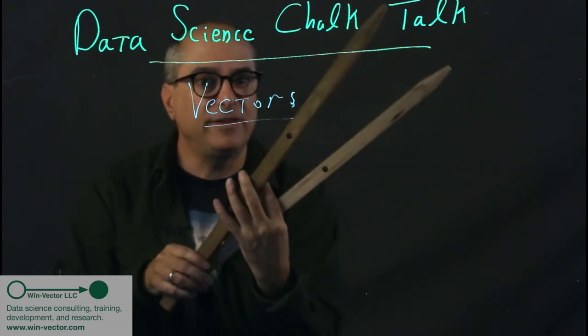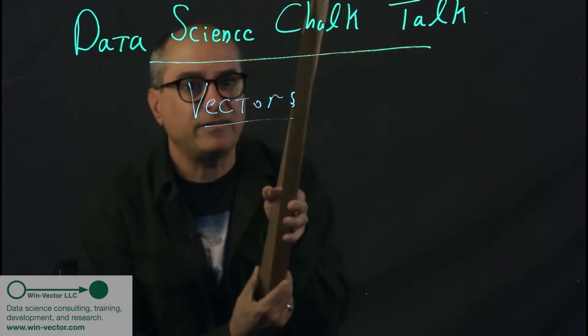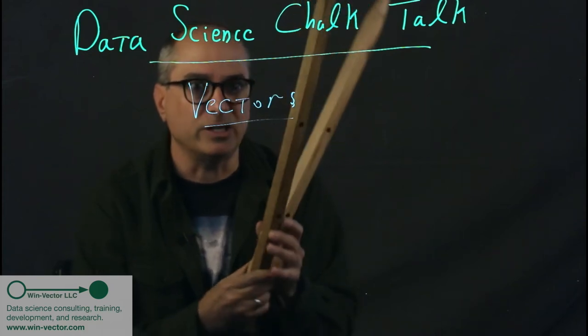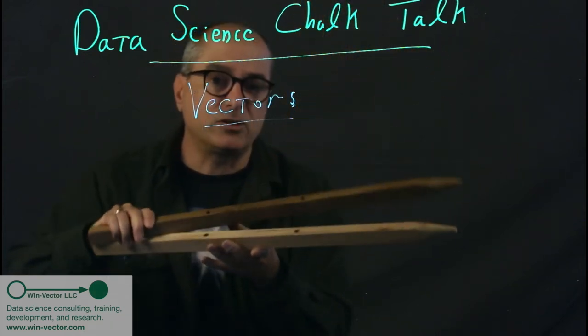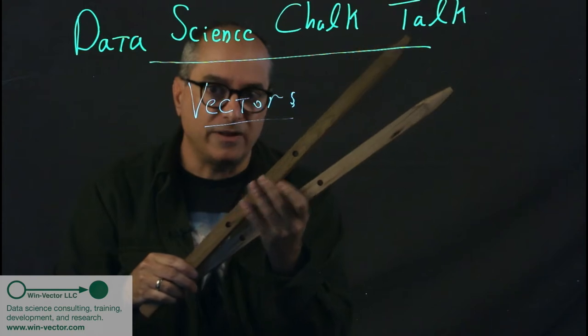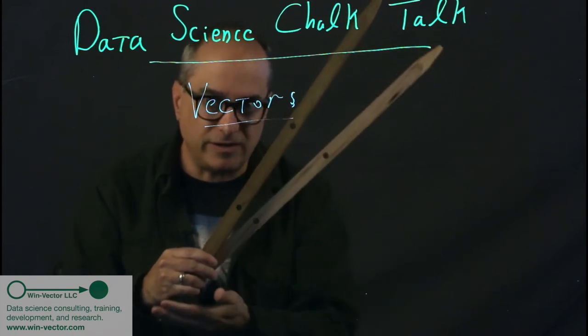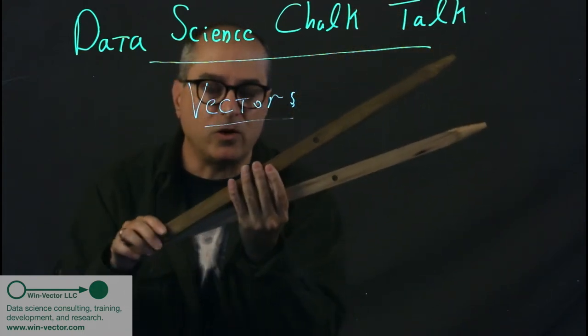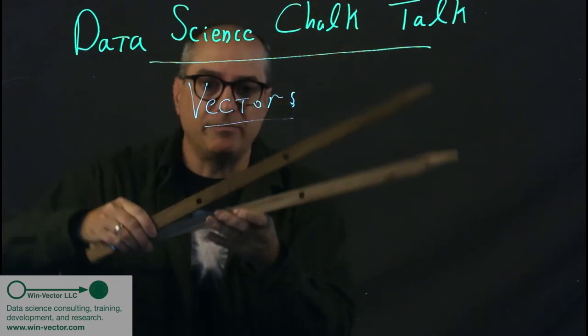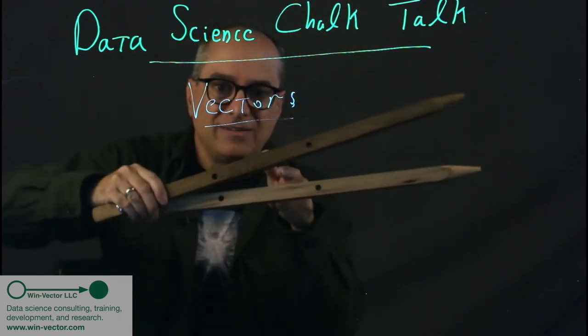And we've rescaled them to have the same length, which means we've only lost one numeric value per vector, essentially. Now, if that's the case, these two vectors have exactly the same relationship as these two vectors. I'm holding this rigid. And that's the trick. For any two vectors that are unit length and share the same origin, which all vectors do, there's only one interesting number between them.